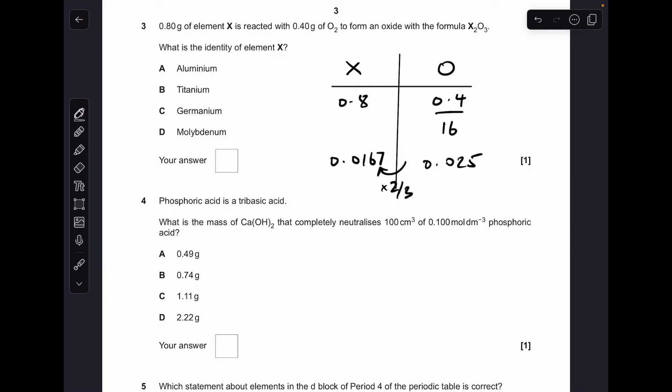We know the mass, we know the moles, so we can work out the Mr. Mr comes out at 48, just mass over moles. So we just look at these, which one's got an Mr of 48, and the answer is titanium. So it was B.